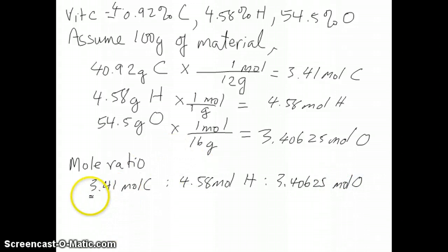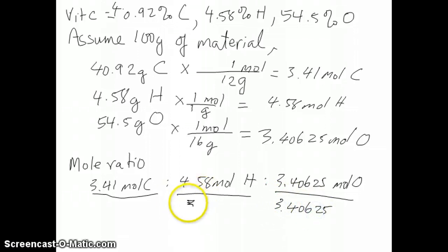If you want to reduce this to a whole number, then the trick is really to just divide this by the smallest number of moles that you have in the series of number of moles. You can see that in this case, this number is the smallest. So I'm just going to divide all of them by 3.40625.